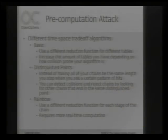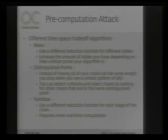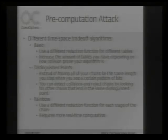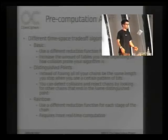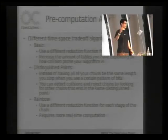One thing proposed to mitigate collisions is distinguished points, where you calculate your chain until you see an output that matches some sort of characteristic, like the last 10 bits being zero. One nice thing about that is that your endpoints can be compressed because you have a lot fewer bits in them. You can also detect collisions more easily because you can just compare the endpoints, and that'll tell you if there was actually a collision that resulted in the same endpoints.